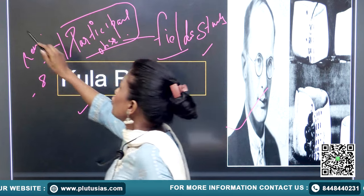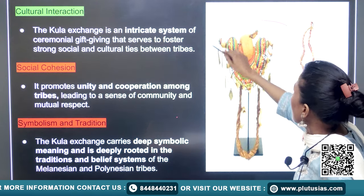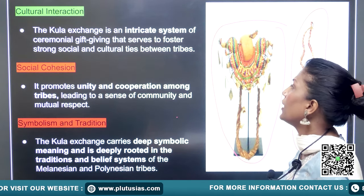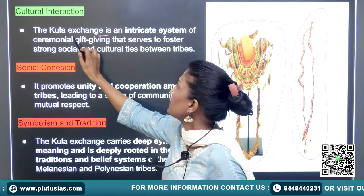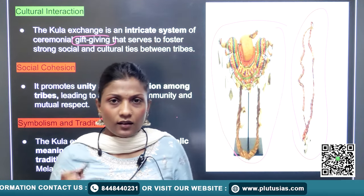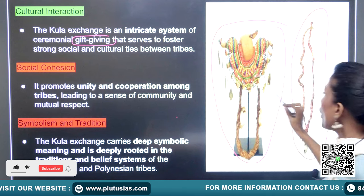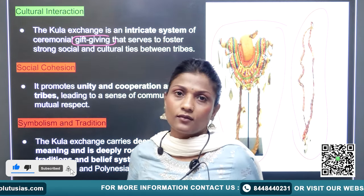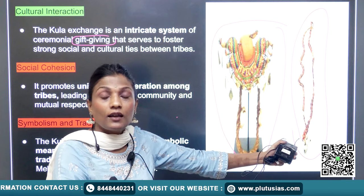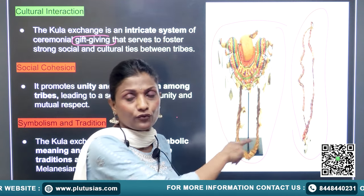So here is a necklace and an armband — these are items of gift-giving exchange, also known as reciprocity. In a Kula Ring ceremony you can see these two ornaments. Ask yourself: what are these, and try to find contemporary cultural relevance for these two ornaments.